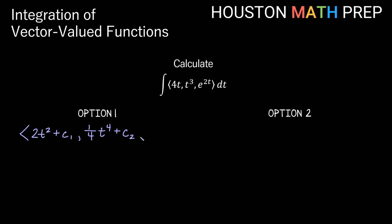Moving on, the integral of e to the 2t — the derivative would have the multiple 2 come out, so the antiderivative we divide by that 2, we get 1 half e to the 2t. We'd have a constant for this one too, so we'd say plus c3, and this would be our answer, the indefinite integral of this vector-valued function.